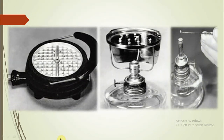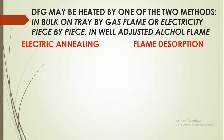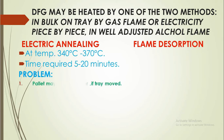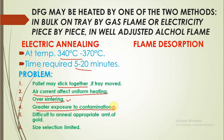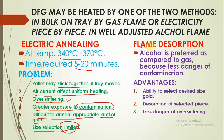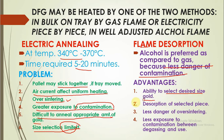Degassing can be done by two ways: electric annealing or flame de-swabbing. In electric annealing, a temperature of 340 to 370 degrees Celsius is used for approximately 5 to 20 minutes. Problems include pellets sticking to each other, air currents affecting uniform heating, risk of over-sintering, greater exposure to contamination, difficulty annealing the appropriate amount, and limited size selection. In flame degassing, alcohol is preferred over gas because there is less danger of contamination. Advantages include more size availability, desorption of selected pieces only, less danger of over-sintering, and less chance of contamination.